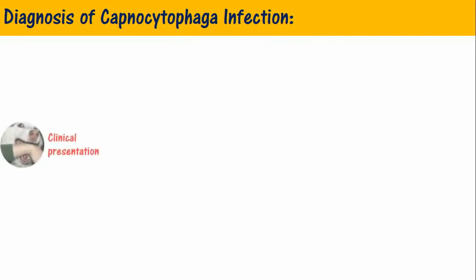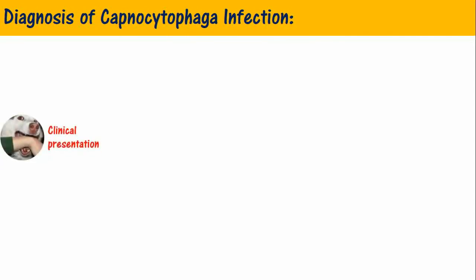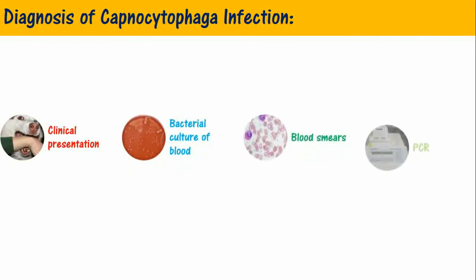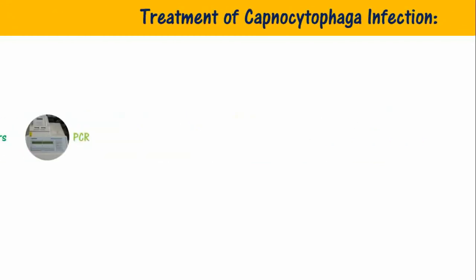Diagnosis: Diagnosis is usually based on clinical presentation. The patient usually presents with a recent animal bite, and laboratory tests such as bacterial culture of blood, blood smears, and new diagnostic tools like 16S rRNA detection by PCR.